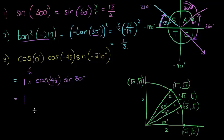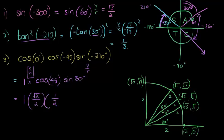Now we can go and substitute. The first one we already got as 1. The second one, cos of 45, is x over r, so that is square root of 2 over 2. Sine of 30 — that's just a half, because sine of 30 is y over r: y is square root of 1, which is 1, and r is 2. And if we simplify this, we get square root of 2 over 4, and that's my answer. I hope you found this as enlightening as I found it enjoyable. See you later.